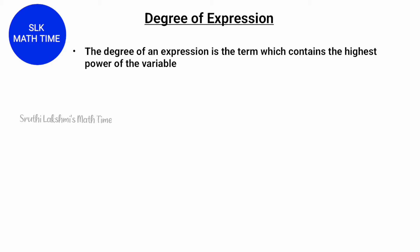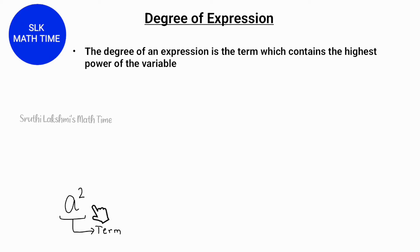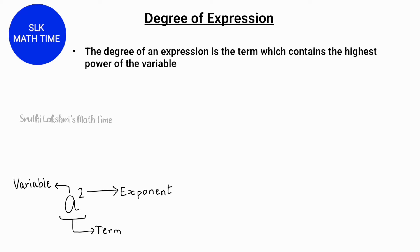First, let's learn about what a degree is. The degree of an expression is the term which contains the highest power of the variable. Here we have the term a² — here our exponent is 2 and our variable is a. Remember, an exponent is always the highest power of a term. So to find the degree of an expression, you have to compare all of the terms and then determine which one is the highest.